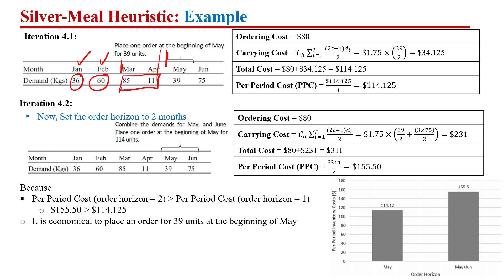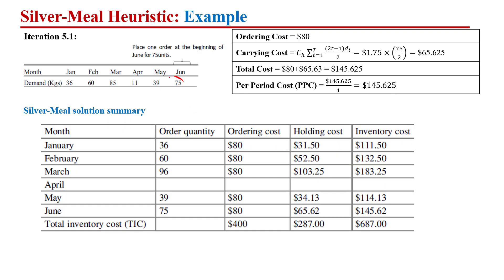Now iteration four, starting from May. Considering a planning horizon of one, the per period cost is computed; then considering a planning horizon of two, the per period cost is computed. When planning horizon one gives the smaller per period cost, we conclude: order at the start of May to meet May's demand, and separately order at the start of June to meet June's demand.